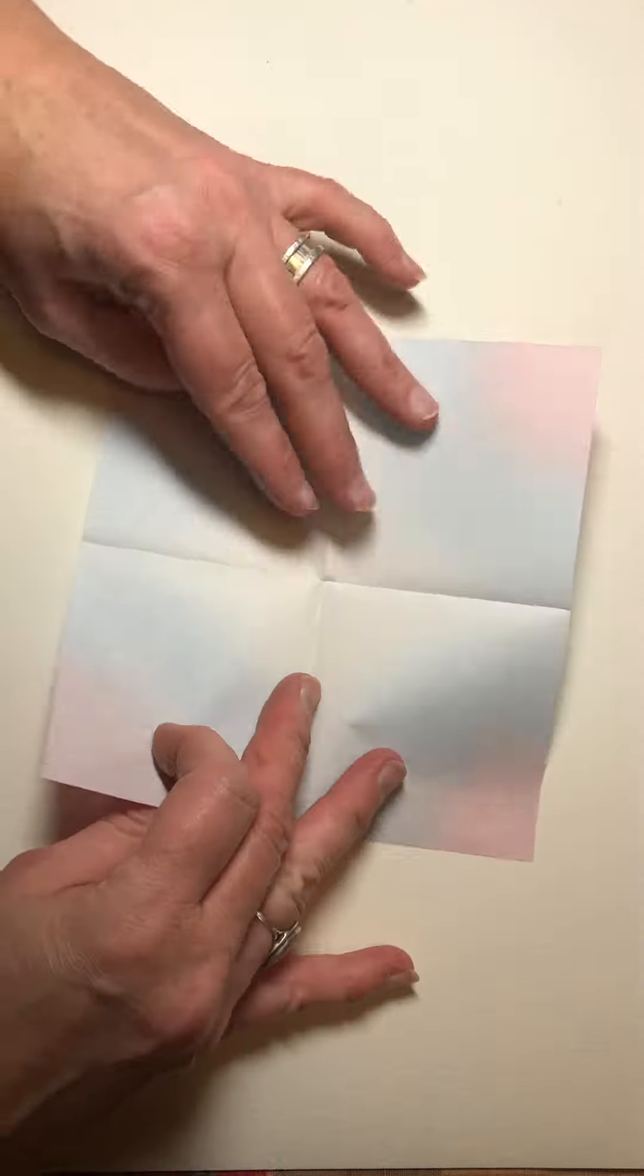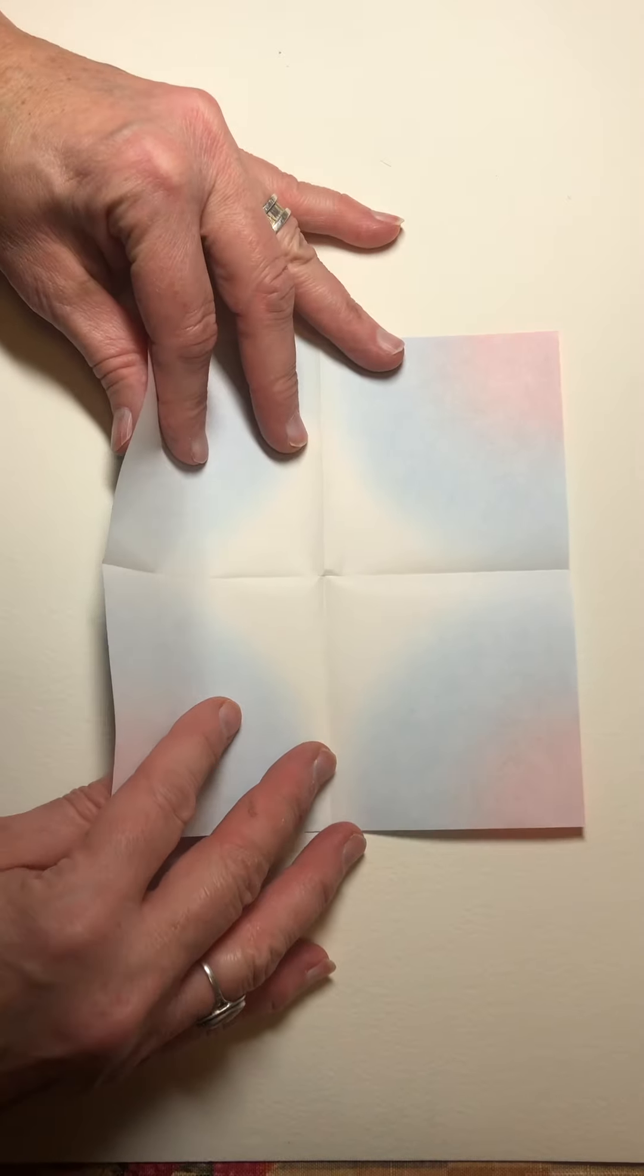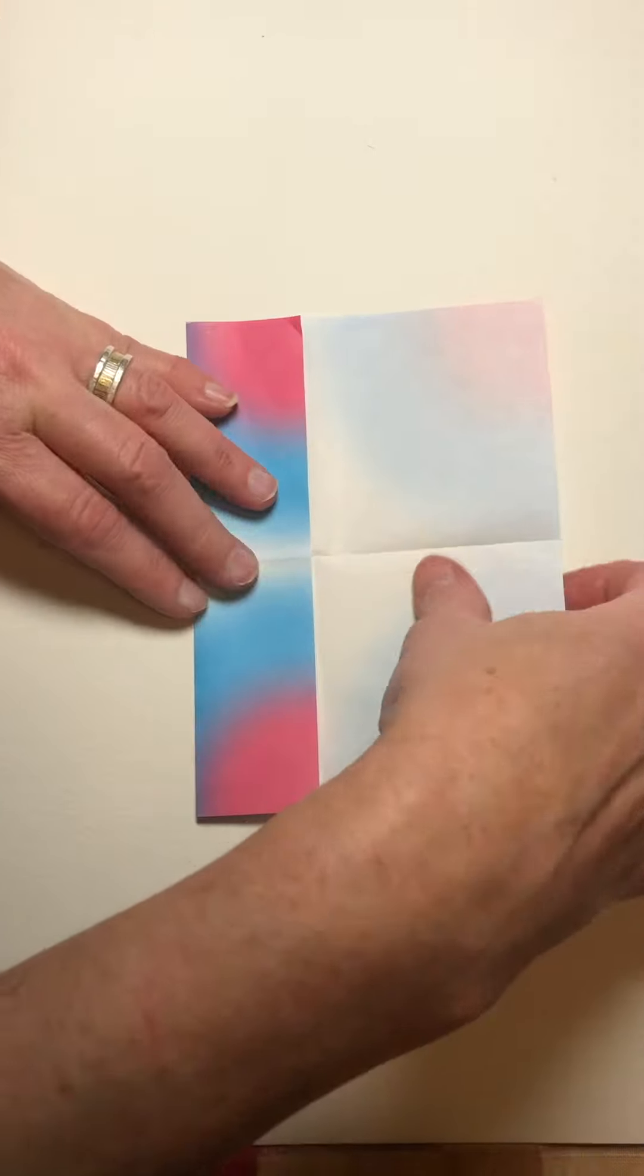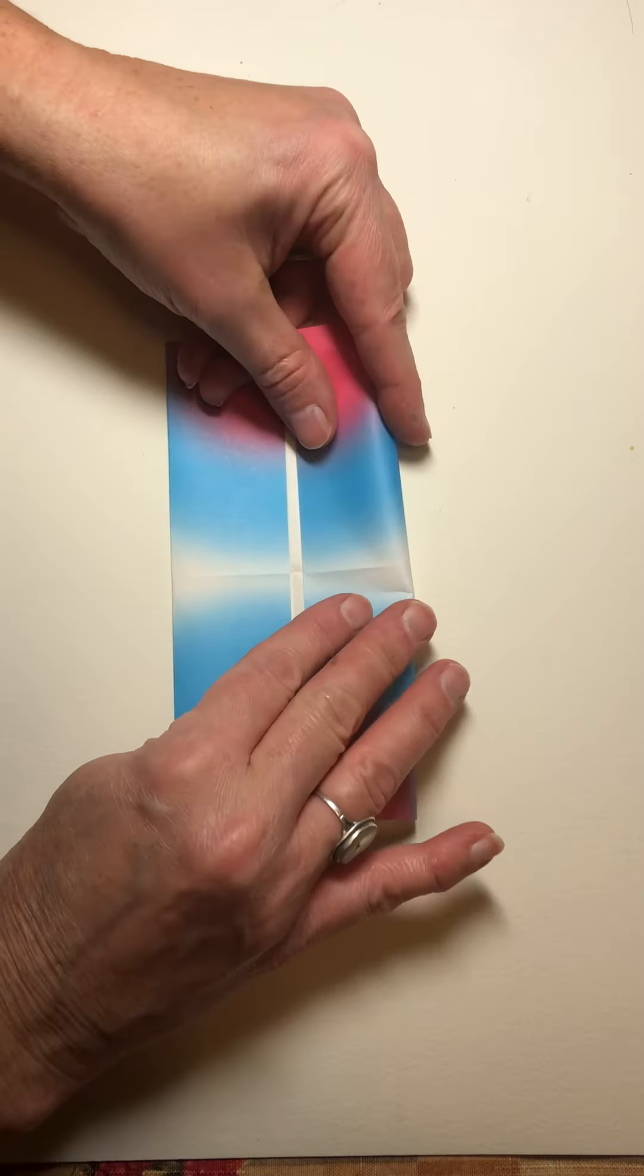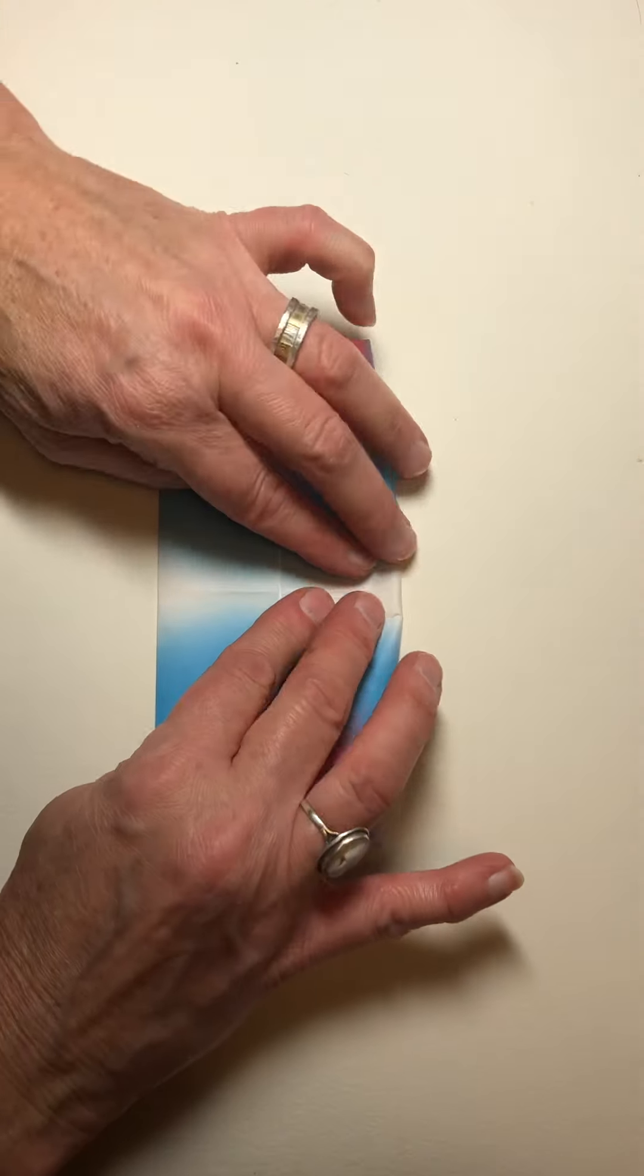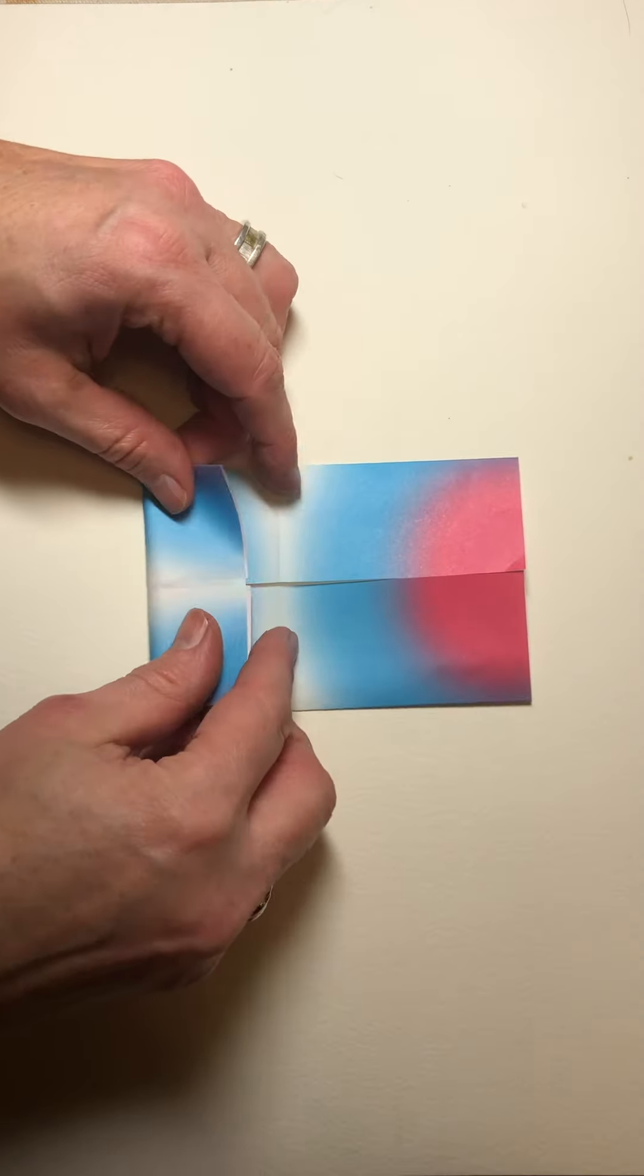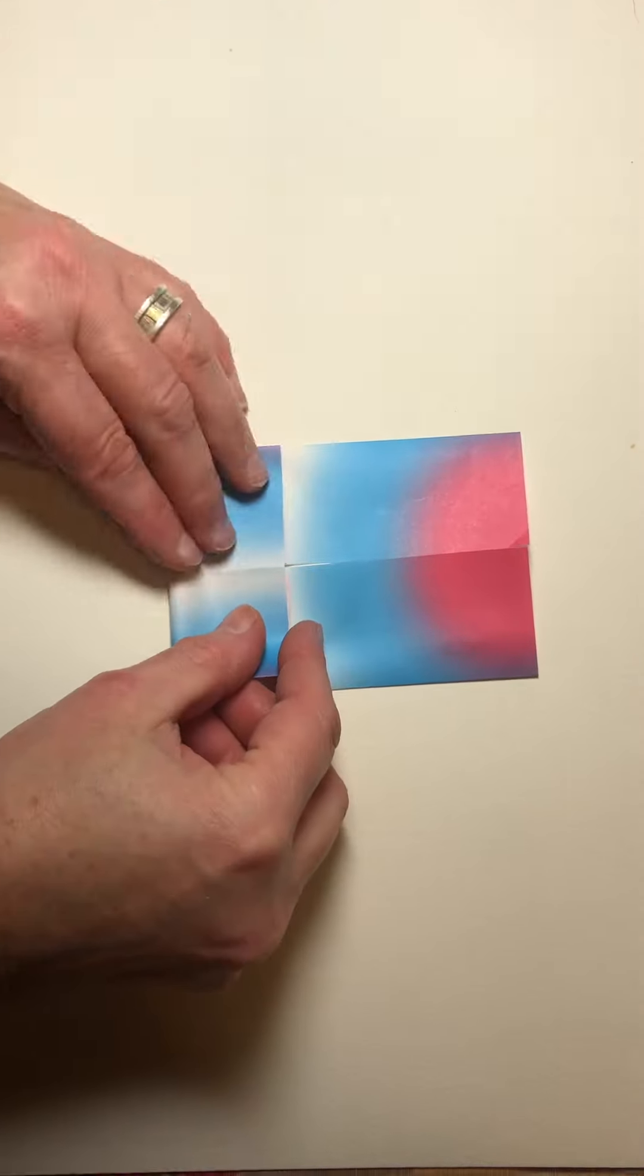Then we open it up. Then we take our outer edges to the center, right and left, and then we take these outer edges to that center line where we made the fold.